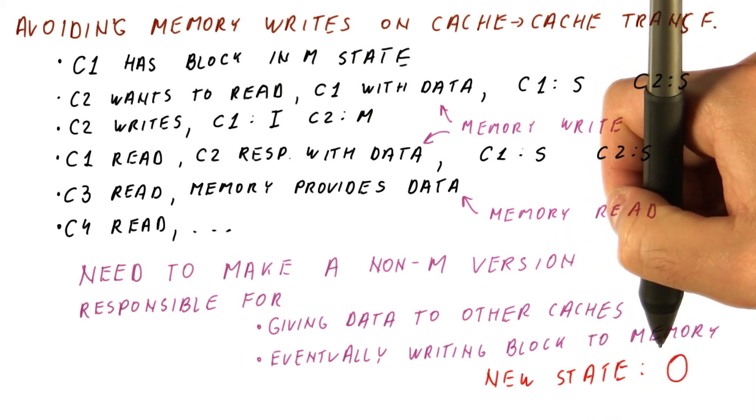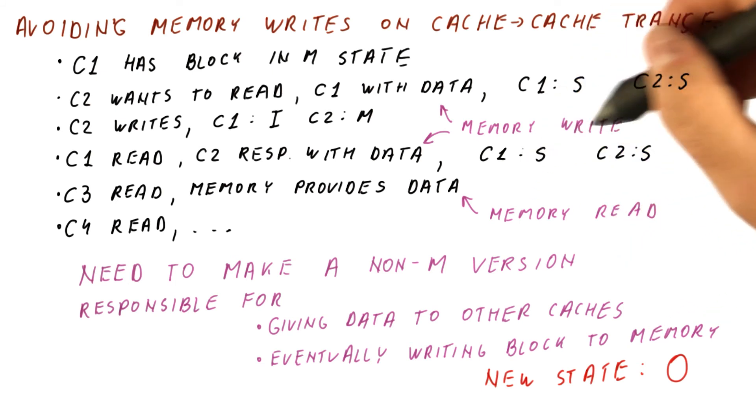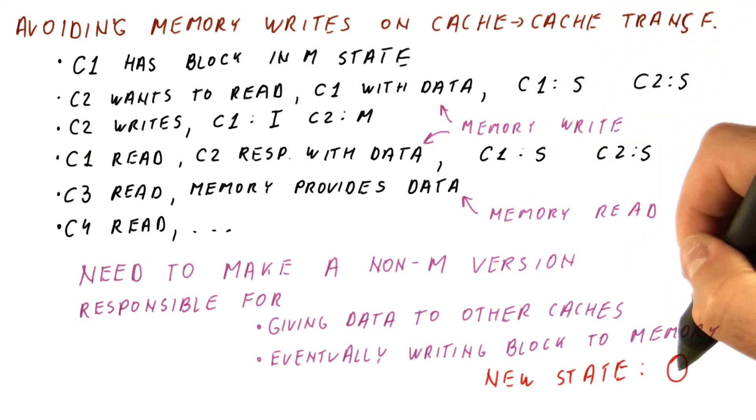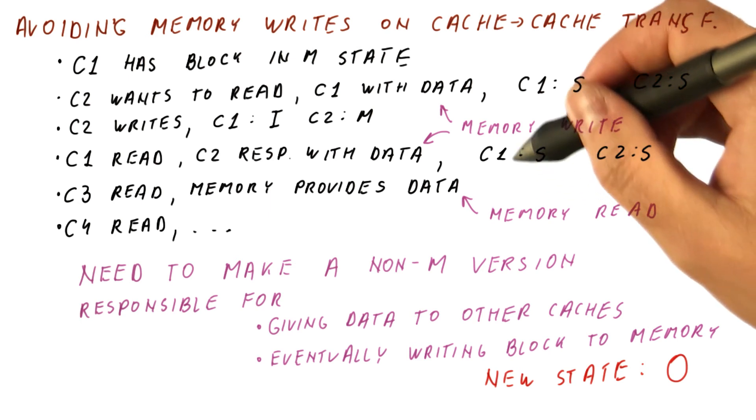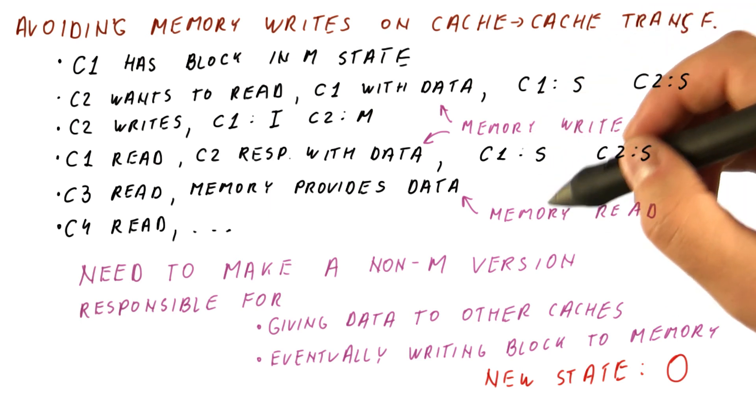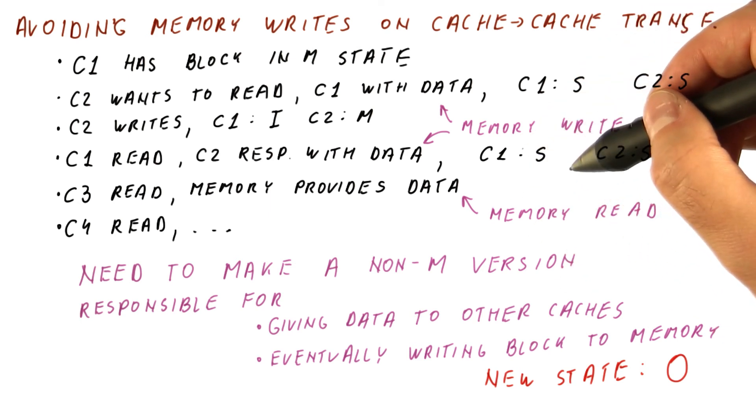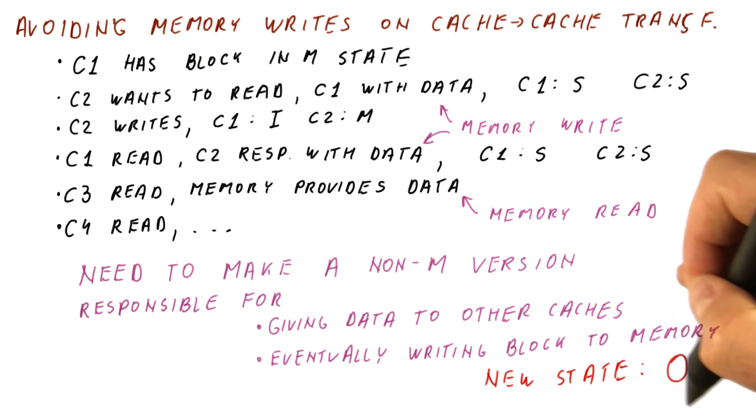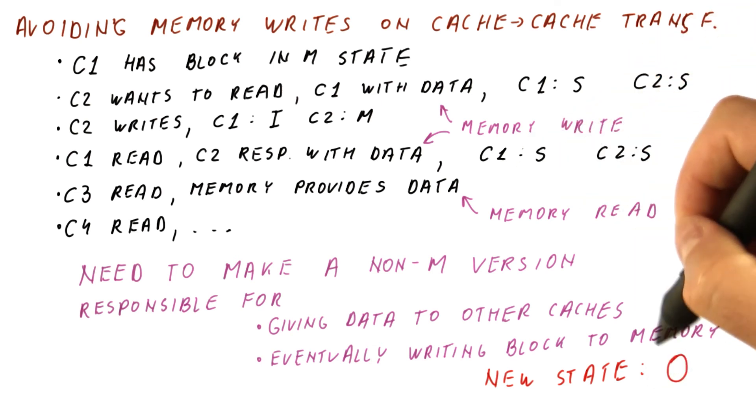So there will be one owner of the block if others are sharing it. The O state will behave just like the shared state, except that whenever there is a request for the data in the block, the owner is the one of the sharers that gets to respond.